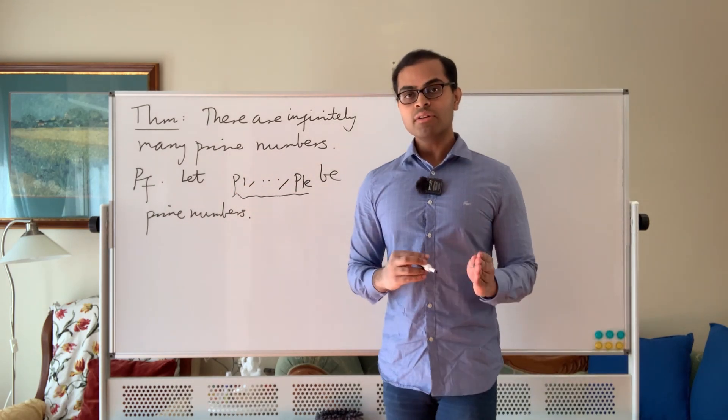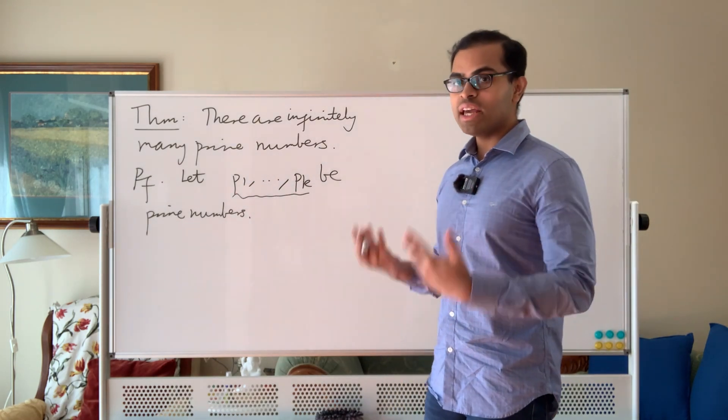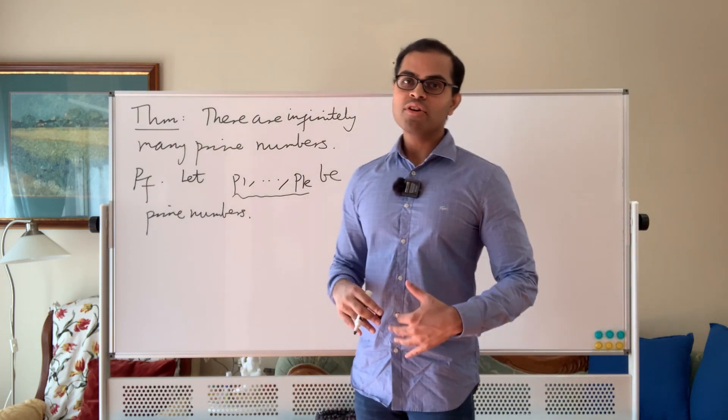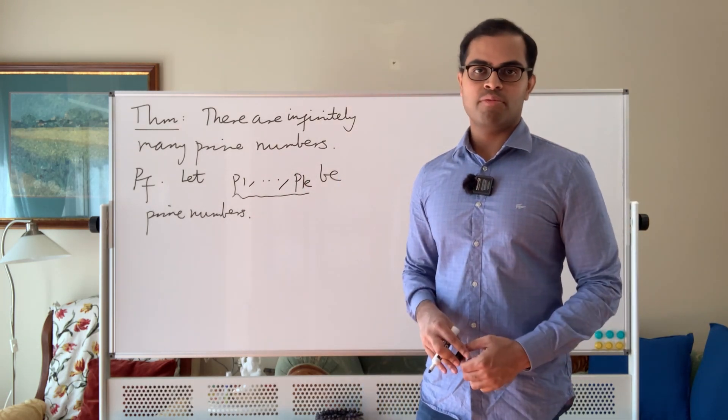Now what Euclid is going to do is he's going to create another prime that is not in this list, and of course if you can keep on doing that forever you have infinitely many primes.